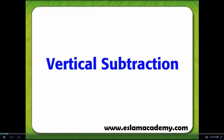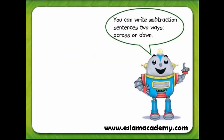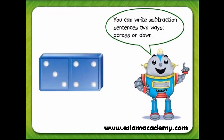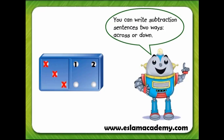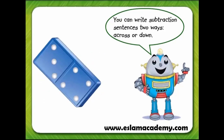Vertical subtraction — you can write subtraction sentences two ways: across or down. Look at the domino. The domino has 1, 2, 3, 4, 5, 6, 7 dots. If we subtract three dots, there are one, two, three, four dots left. We can write the subtraction sentence across: seven minus three equals four.